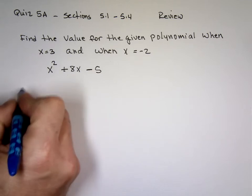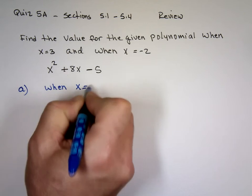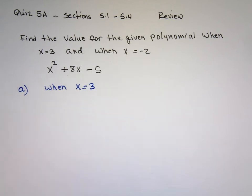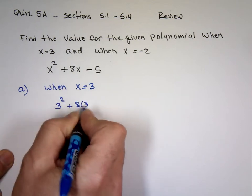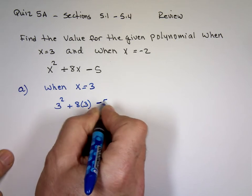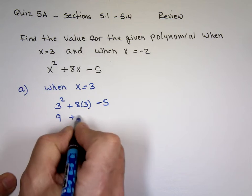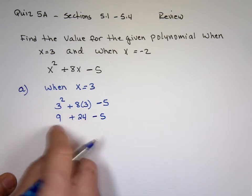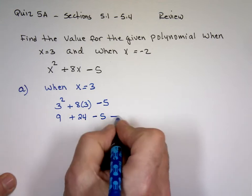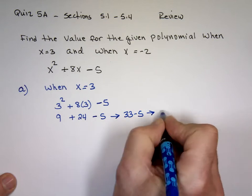Part a: when x equals 3, replace x with 3. You'll have 3 squared plus 8 times 3 minus 5. Notice all we're doing is replacing x with 3. Jamie said that's 9. This is plus 24, minus the 5. What's 9 plus 24? 33. 33 minus the 5? 28.